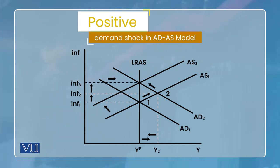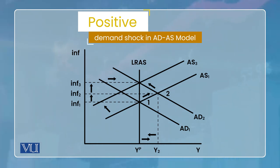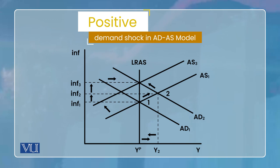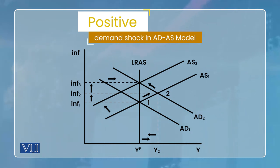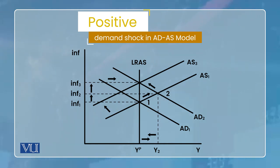Is diagram mein ek aggregate demand curve hai jo AD1 ke naam se hai, ek short run aggregate supply curve hai jo AS1 ke naam se hai, aur ek LRAS long run aggregate supply curve hai jo YP par vertical hai. Ye teenon jahan pe intersect karte hain, point 1 pe, wo hamara long run ka general equilibrium hai. Ab agar ek positive demand shock aa gaya - jab economy already equilibrium mein thi, point 1 pe - to is shock se positive demand shock ne demand curve ko right side pe shift kiya, so aggregate demand curve AD1 ki bajaaye AD2 ho gaya. Jab AD2 ho gaya aur AS abhi AS1 hi hai, to naya equilibrium point 2 pe bana jo short run equilibrium hai lekin long run equilibrium nahi.